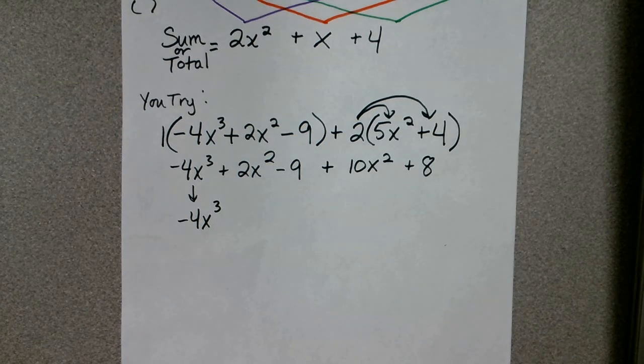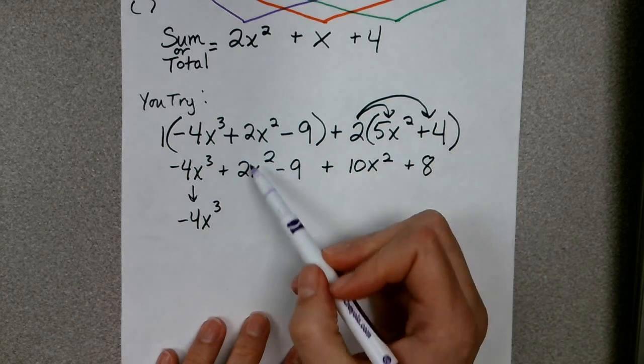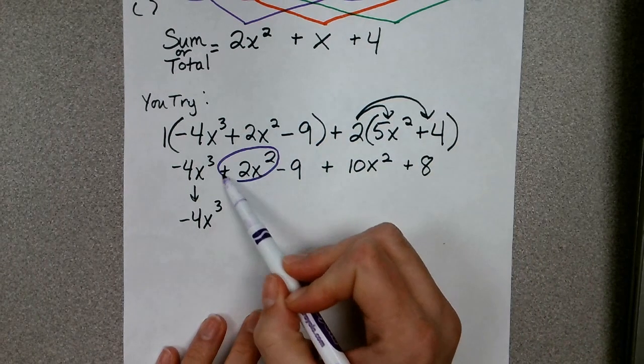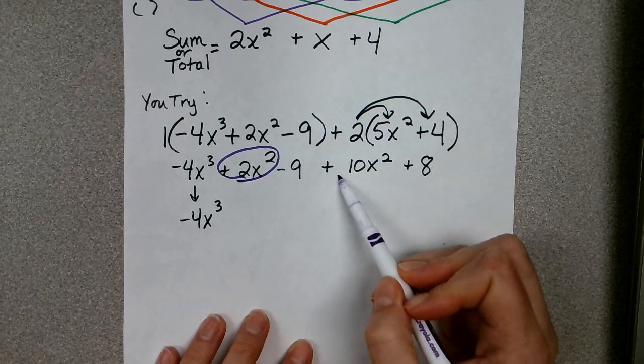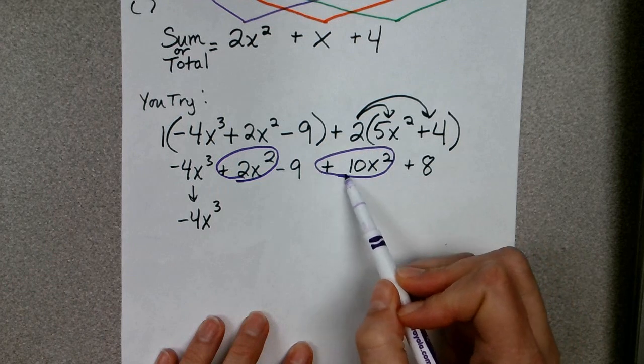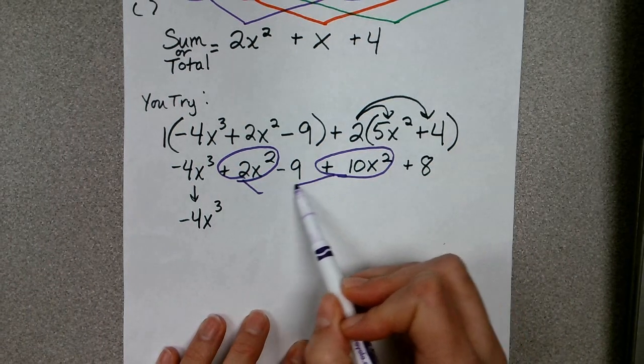Now for the next highest power, I notice I have a positive 2x² and I also have a positive 10x². So when I combine these, I have a total of positive 12x².